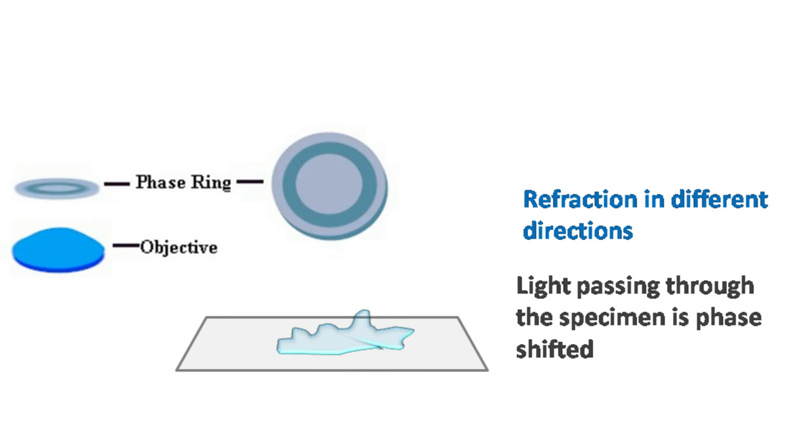If the refracted light hits the phase ring in the objective, the phase shift of the light increases and that region of the specimen is seen as dark. If the refracted light fails to hit the phase ring, then that region of the specimen is seen as bright.